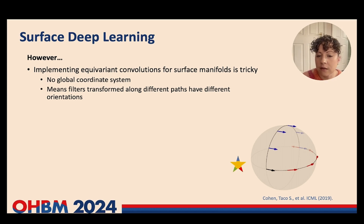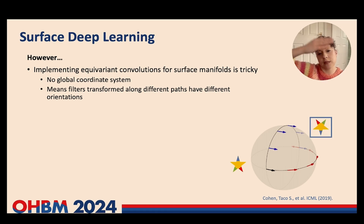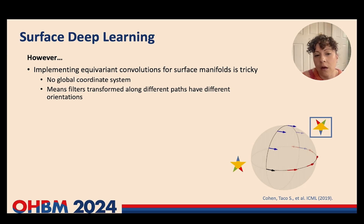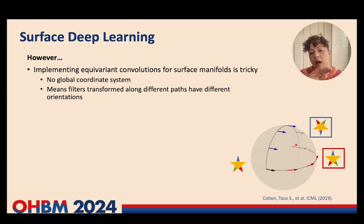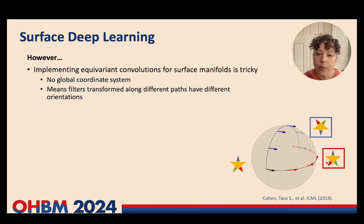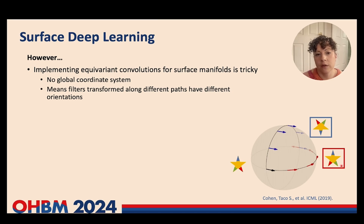Consider a star filter with a blue point at the top, green on the left, and red on the right. If we take it over the blue path, then when we get to the opposite side of the sphere, the filter is turned upside down. On the other hand, if we go around the red path, our filter ends up flipping left-right — so we have the red point at the bottom on the left and the green on the right. These two filters have different orientations.